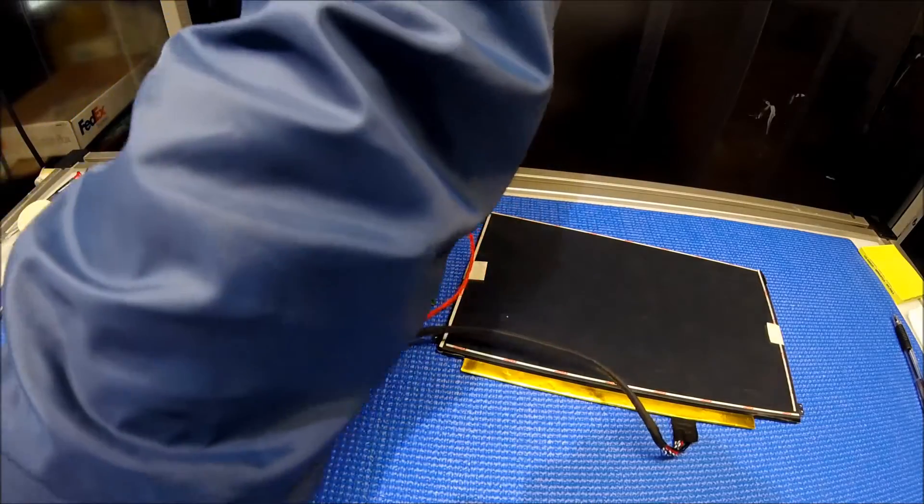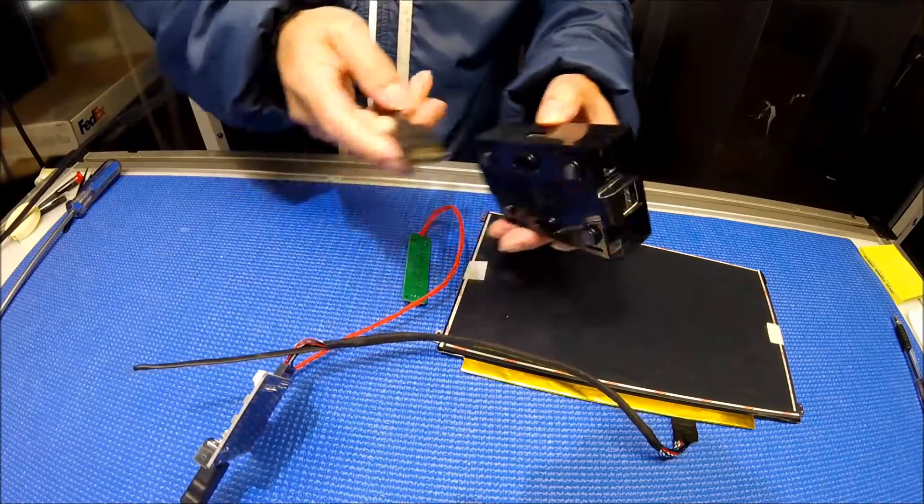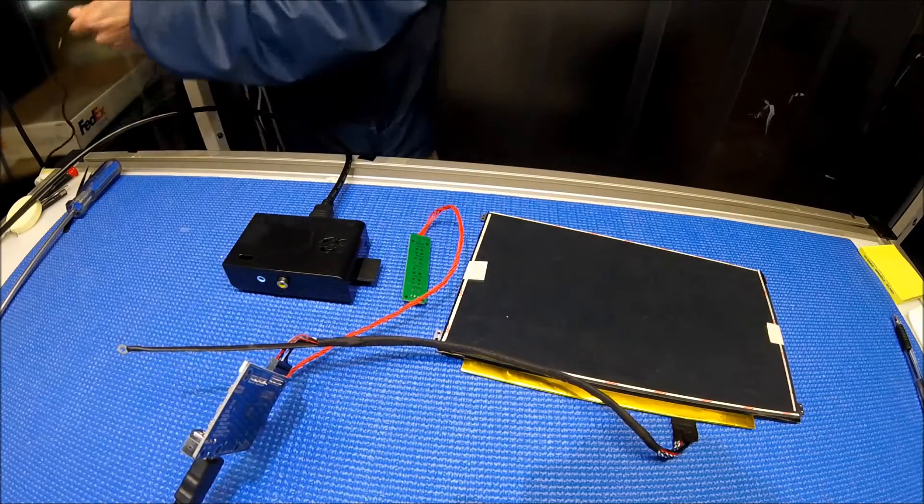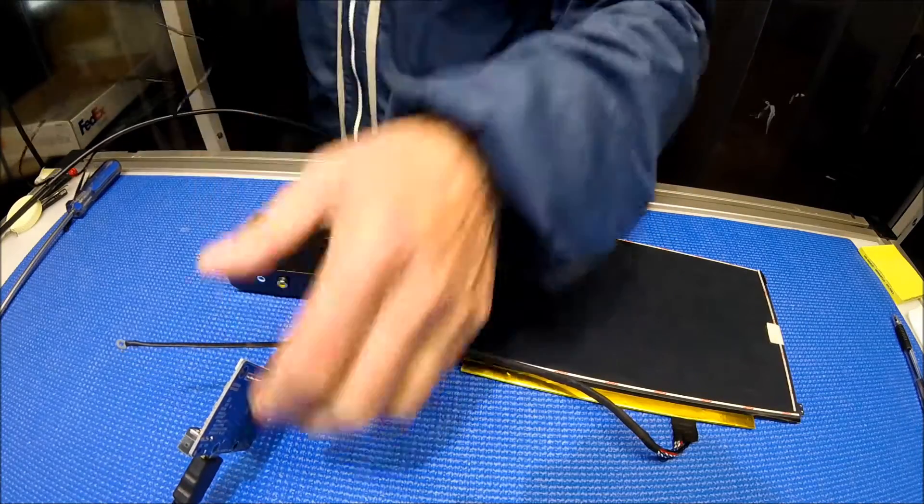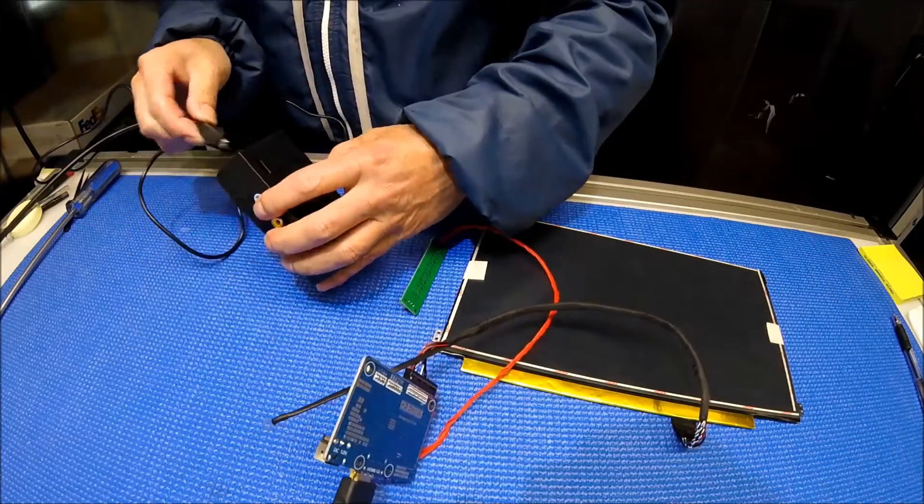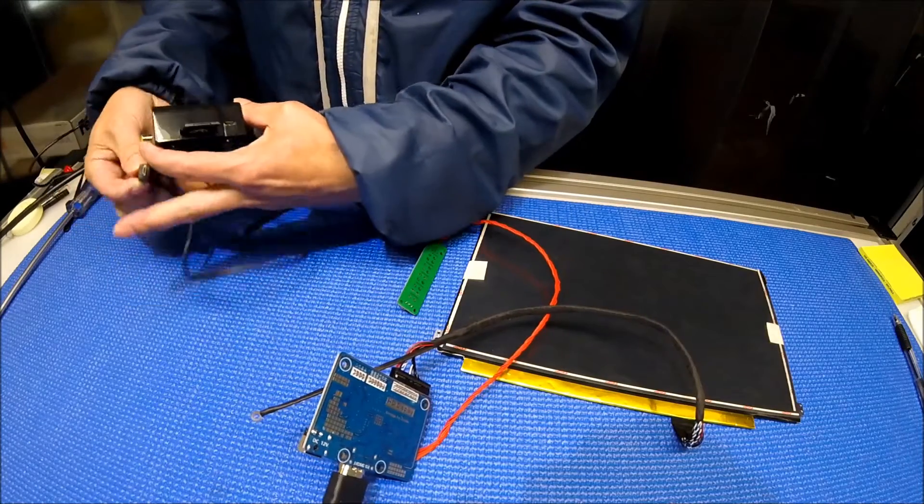The cable is kind of big and thick. Then to the Raspberry Pi here. I'm going to connect the power to it. See what we got. Here we got the power.